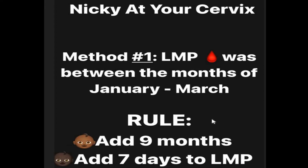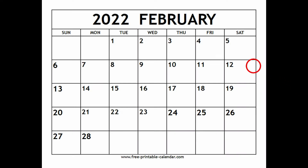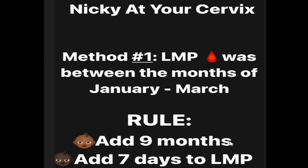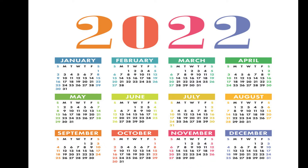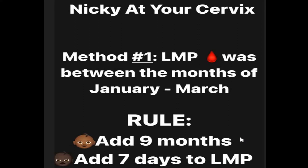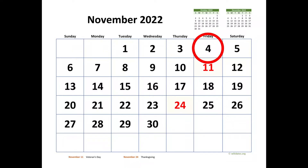Let's look at an example. Say the first day of your last menstrual period was February 4, 2022. We're going to add nine months: starting from February, the first month is March, April is two, May is three, June is four, July is five, August is six, September is seven, October is eight, and November is the ninth month. So we know her due date will be in November, and we're now at November 4, 2022.